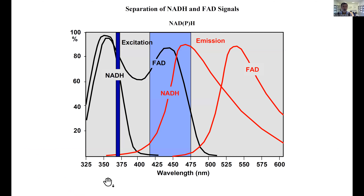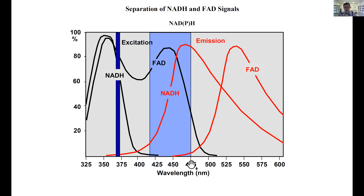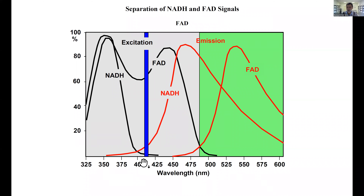Still, the problem is we have to separate the signals of NADH and FAD. We must excite NADH at short wavelengths, typically around 370 nanometers, and detect around 450 nanometers. At the same time FAD is also excited — this is unavoidable. So we should not detect wavelengths longer than about 475 nanometers, otherwise we contaminate the NADH signal with FAD. When detecting FAD, we can't excite at short wavelengths either, so we use 410 nanometers and detect from around 490 nanometers upward to avoid mixing with NADH.